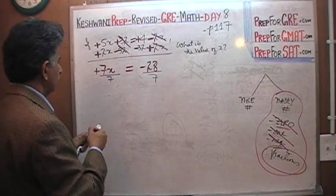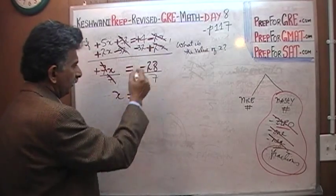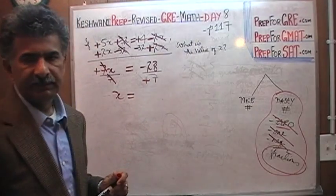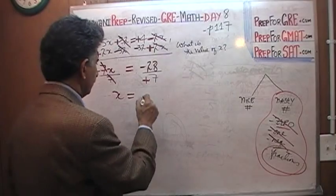So now we have this 7 on the top and bottom cancels out. And x equals negative 28 divided by positive 7. How many 7s in 28? 4 sevens are 28. So it's negative 4.